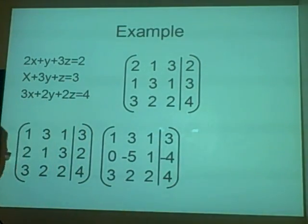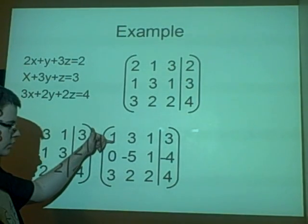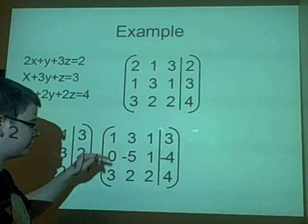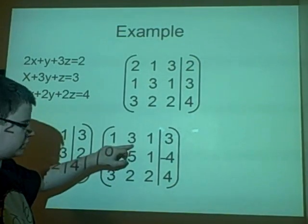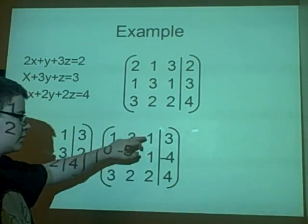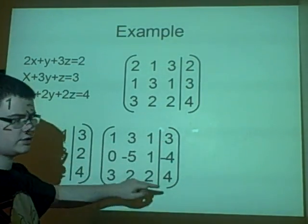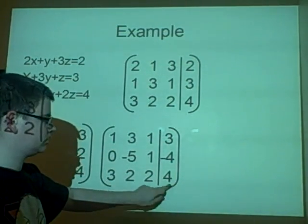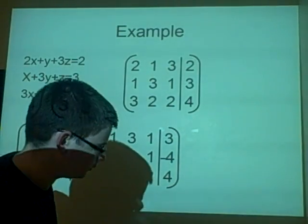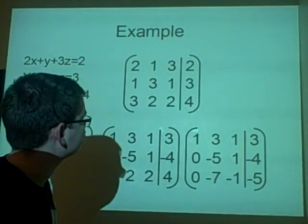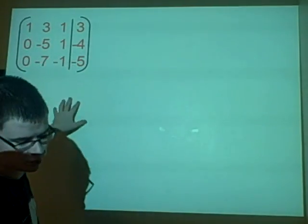Now the next one we want to do is this one. So we want that to be 0, so we can subtract 3 of this. So it'll be 0, we take off 3 of this it'll be minus 7, we take off 3 of this it'll be minus 1, and we take off 3 of this it'll be minus 5. There you go, and we'll just move on to the next slide because I've moved it over. This is just our equation up here.